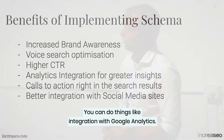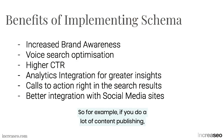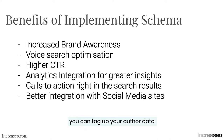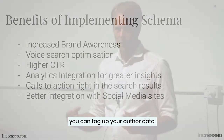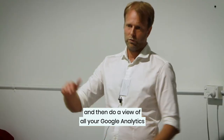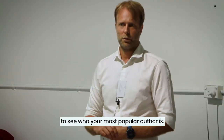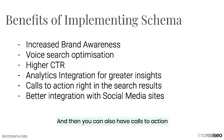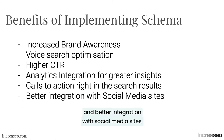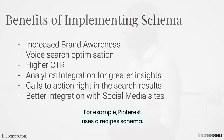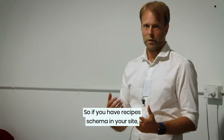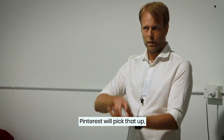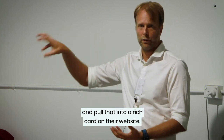You can do things like integration with Google Analytics — for example, if you publish a lot of content with different authors, you can tag up your author data, hook that into Analytics, and see who your most popular author is. You can also have calls to action right within the search results, and better integration with social media sites. For example, Pinterest uses a recipe schema — if you have recipe schema on your site, Pinterest will pick it up and pull it into a rich card.